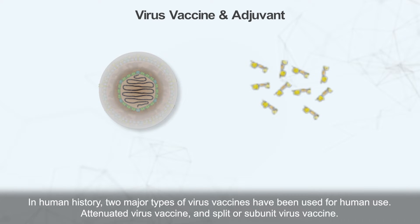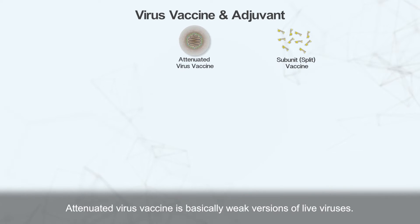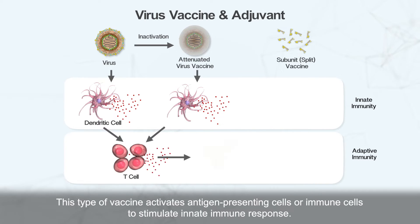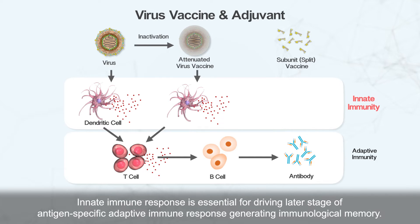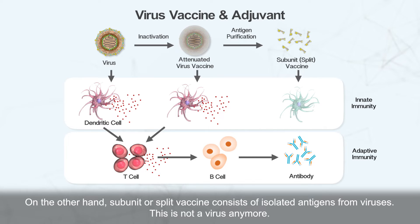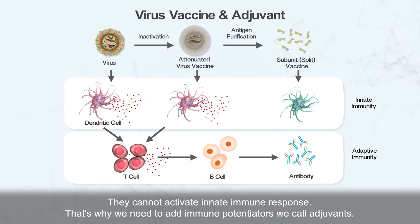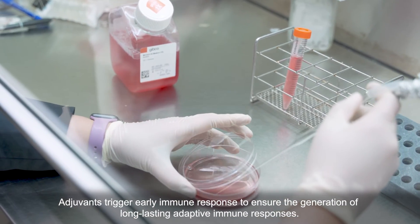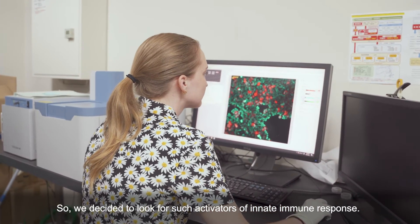In human history, two major types of virus vaccines have been used: attenuated virus vaccines and subunit or split virus vaccines. Attenuated virus vaccines are basically weak versions of live vaccines that activate antigen-presenting cells to stimulate innate immune response, which is essential for driving antigen-specific adaptive immune response and generating immunological memory. On the other hand, subunit or split vaccines consist of isolated antigens from viruses — they cannot activate innate immune response. That's why we need to add immune potentiators, which we call adjuvants, to trigger early immune response and ensure the generation of long-lasting adaptive immune responses.